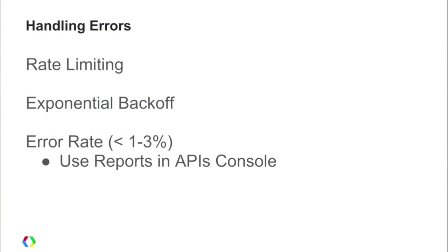On error rate — in the APIs console you can see all the different statistics, including error rates. We typically recommend your error rate should be below 1% to 3%. If it's above that, you should look at your app and see what you could be doing differently to bring down that error rate. Handling errors gracefully is essential — rather than users seeing a weird error, you can be transparent and let them know what's going on.